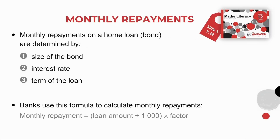Let's look at monthly repayments. Monthly repayments on a home loan or a bond are determined by the size of the bond, the interest rate, and the term of the loan — the length of the loan. Banks use this formula to calculate monthly repayments: monthly repayment equals the loan amount divided by a thousand, times by the factor.